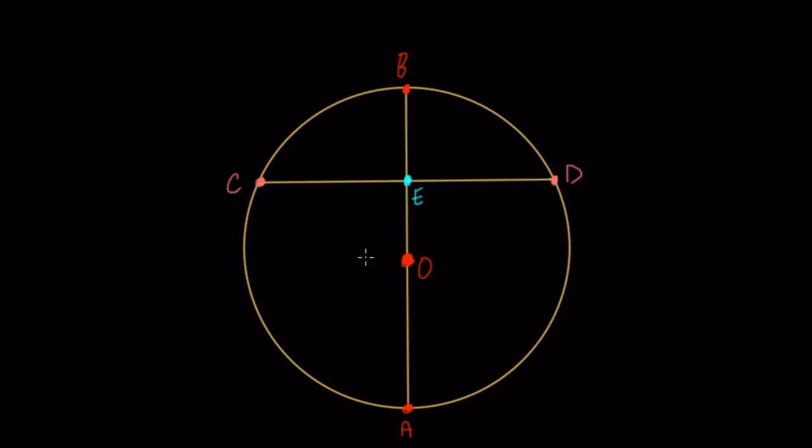So we're also told that the distance from E to B is X, so we can label this as X, and we're also told that the distance from A to E, this distance right here, is X plus 9, and the last thing we're told is that distance CE is X plus 4, and we're asked to find all the values of X that could work here.